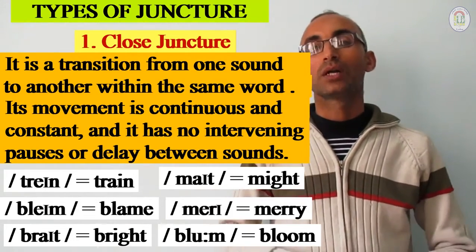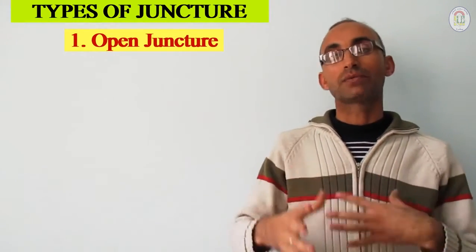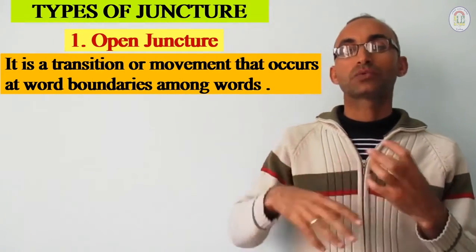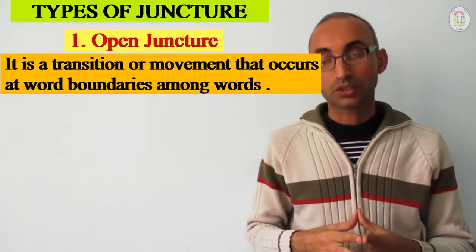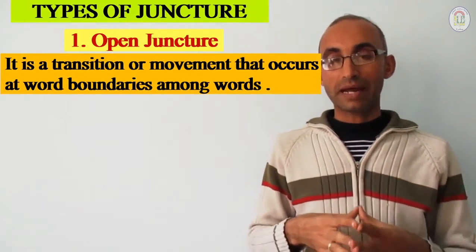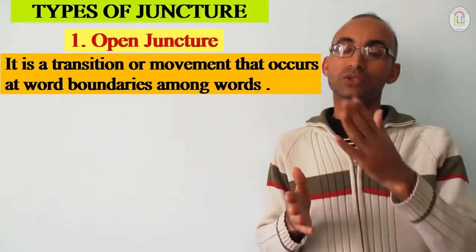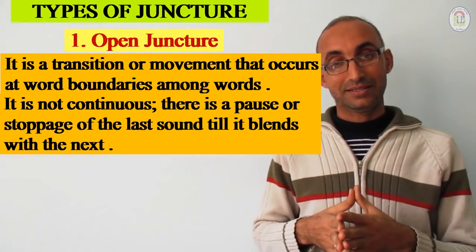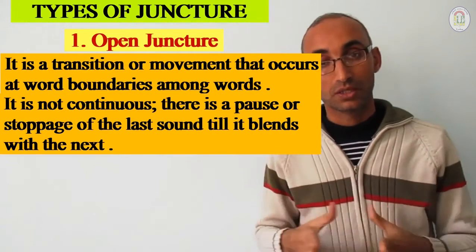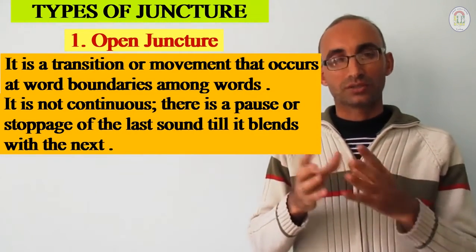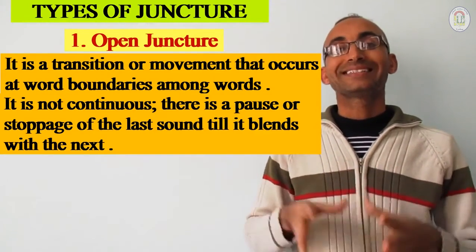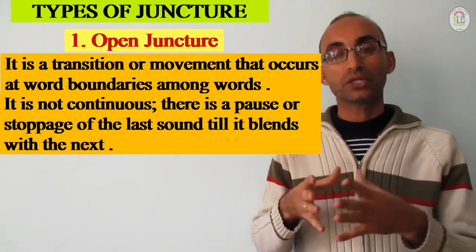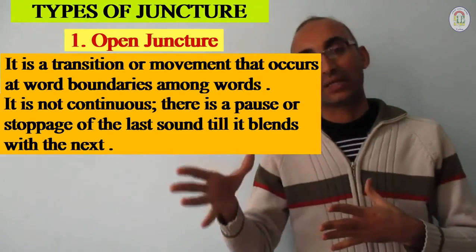The second type of juncture is called open juncture. Open juncture is a kind of movement and transition that occurs at word boundaries — not within the same word, but between words. It is not continuous like close juncture. There is a slight stoppage or pause of the last sound until it blends with the next sound. Examples include: 'an aim' versus 'a name,' 'nitrate' versus 'night rate,' 'its wings' versus 'it swings,' and the earlier examples of 'ice cream' versus 'I scream,' and 'might rain' versus 'my train' — these all belong to open juncture.